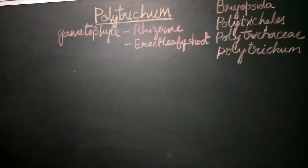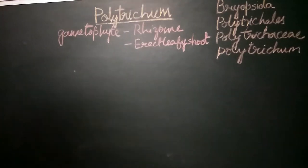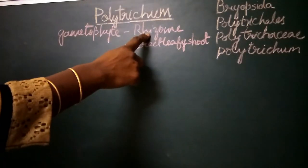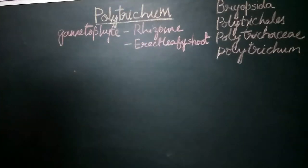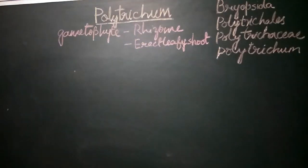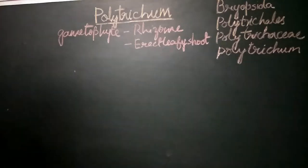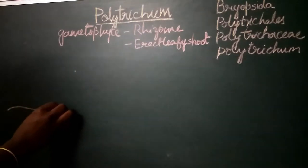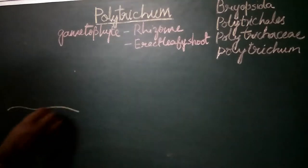The plant body of Polytrichum is a gametophyte which has two different parts: one is an underground rhizome, and the other is an erect leafy shoot. The rhizome of Polytrichum is an underground horizontally creeping structure.